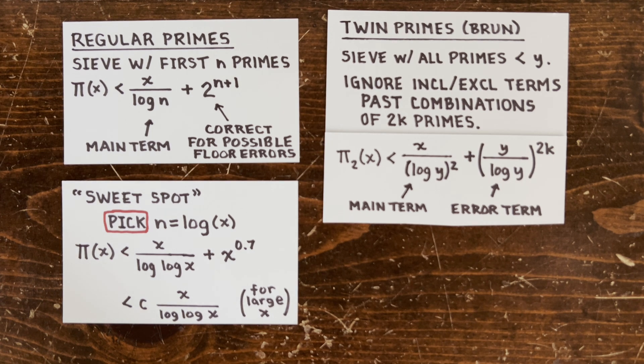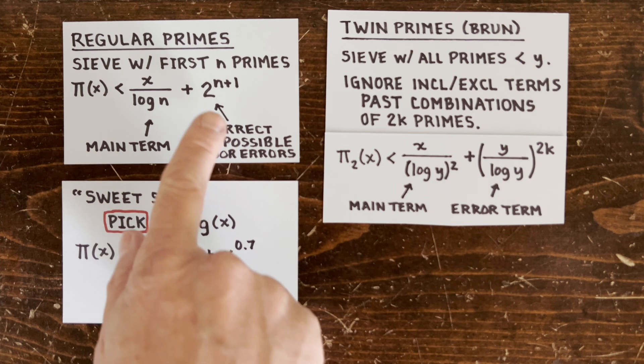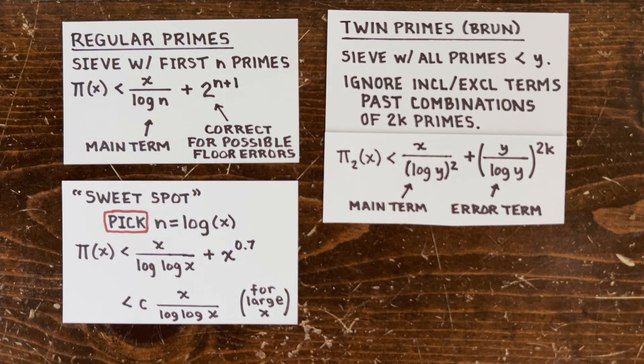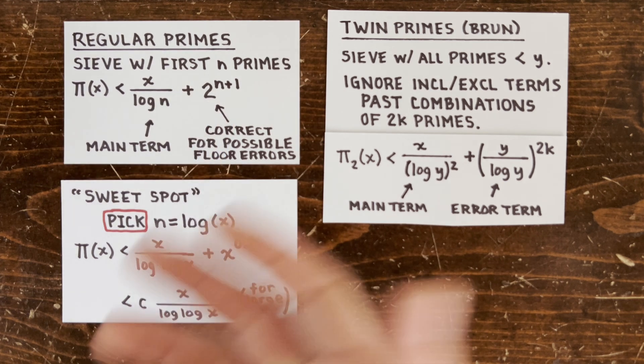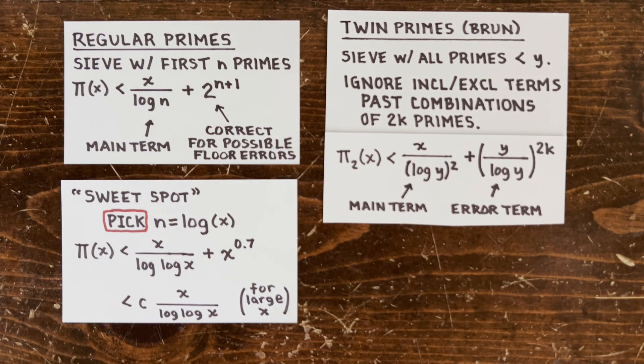But to keep this inequality functioning, we had to throw in this error term to account for how much we misestimated things by dropping the floor symbols. So now we have to pick n. If we pick it too high, like x or the square root of x, the error term is going to dominate. And we'll just wind up saying π(x) is less than x. Not too useful.